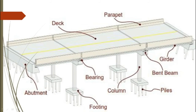Let us understand the function of each component in detail. The deck is the major component of the bridge on which the vehicles move. The deck is usually provided with a wearing coat. The function of this wearing coat is to prevent the structural concrete of the bridge deck from damage and to provide sufficient camber to the bridge deck.